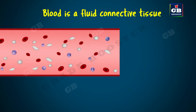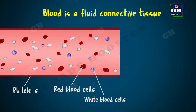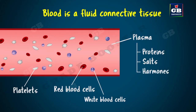First let us see about blood. Blood is a fluid connective tissue. Blood has different types of cells like RBC, WBC, and platelets. These cells are suspended in a fluid matrix called plasma. The plasma contains proteins, salts, and hormones.